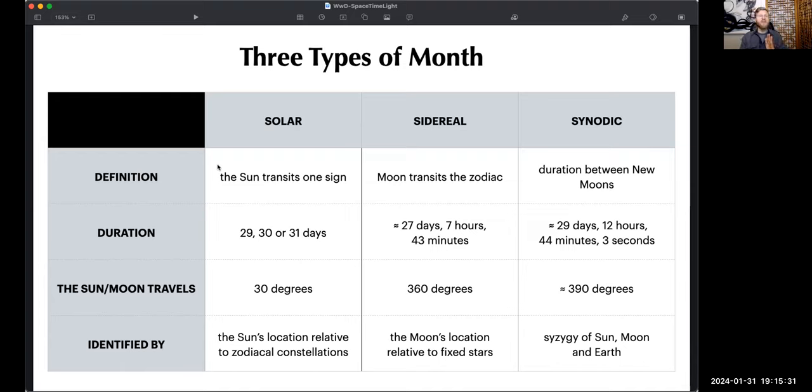A solar month is the amount of time it takes for the sun to move through one sign of the zodiac. Each sign gets a 30 degree portion of the sky, and so it takes about 30 days. But again, things wax and wane. Sometimes it only takes 29 days to go through a sign, sometimes it takes 31 days because the earth is moving at a different speed relative to its point in orbit around the sun.